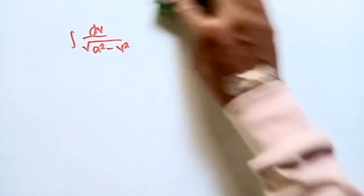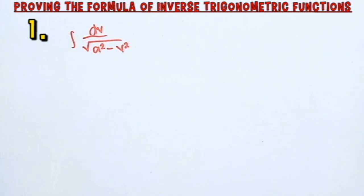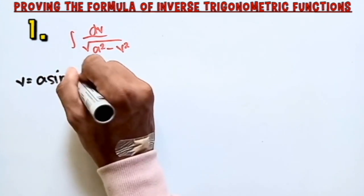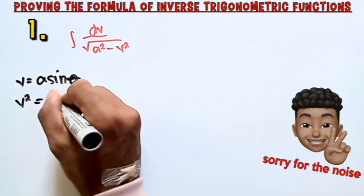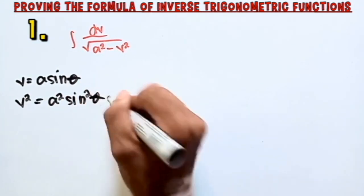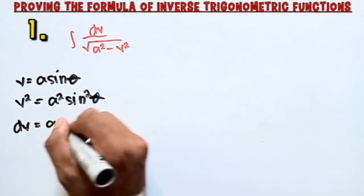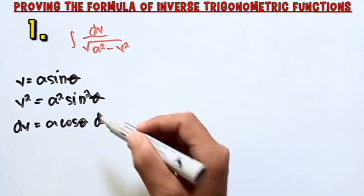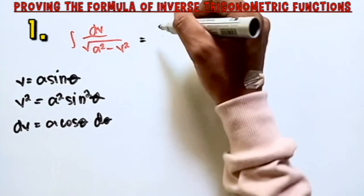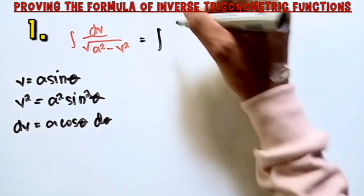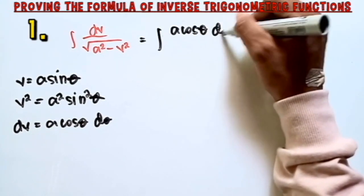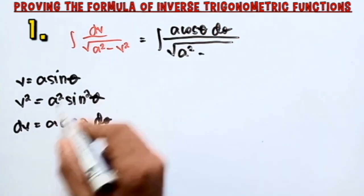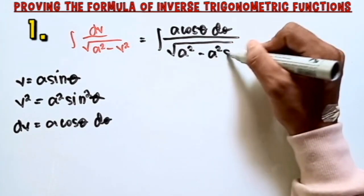First, I will integrate the integral of dv over the square root of a² minus v². Using trigonometric substitution, I will let v = a sinθ. So v² = a² sin²θ, and dv = a cosθ dθ. Now I will input these values into the integral, giving a cosθ dθ over the square root of a² minus a² sin²θ.